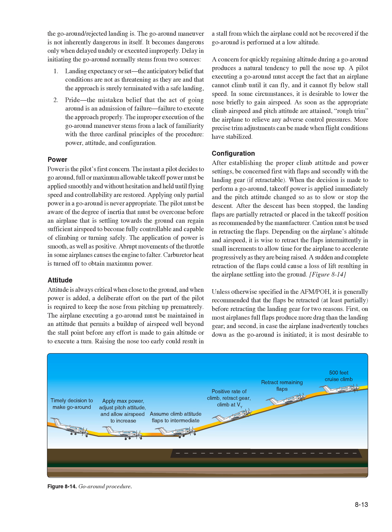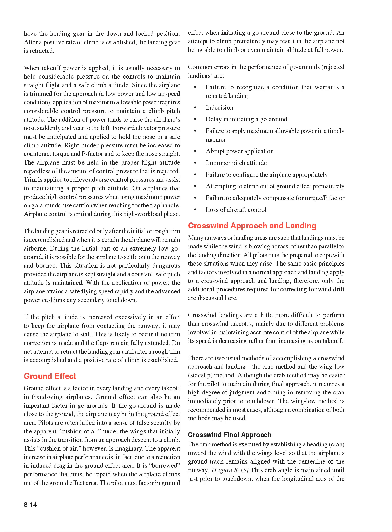Configuration. After establishing the proper climb attitude and power settings, be concerned first with flaps and secondly with the landing gear if retractable. When the decision is made to perform a go-around, takeoff power is applied immediately and pitch attitude changed to slow or stop the descent. After the descent has been stopped, landing flaps are partially retracted or placed in the takeoff position as recommended by the manufacturer. Caution must be used in retracting the flaps—retract them intermittently in small increments to allow time for the airplane to accelerate progressively. A sudden and complete retraction of the flaps could cause a loss of lift resulting in the airplane settling into the ground. It is generally recommended that flaps be retracted at least partially before retracting the landing gear, because full flaps produce more drag than the landing gear, and in case the airplane inadvertently touches down during the go-around, it is most desirable to have the landing gear in the down and locked position.